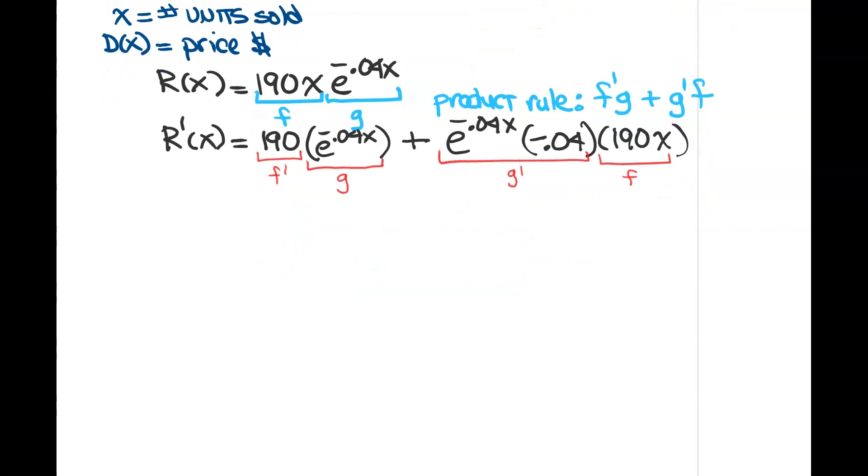What I need to do with that derivative is reorganize it. I'm going to factor it because I'm going to set it equal to 0 and see if I can find some critical points. I'm not going to multiply -0.04 times 190. I think it's easier for me to just factor out my common factors of each term. I notice in each term that I do have a 190, so I'm going to factor out a 190 from both of those terms, and I'm also going to factor out the e^(-0.04x).